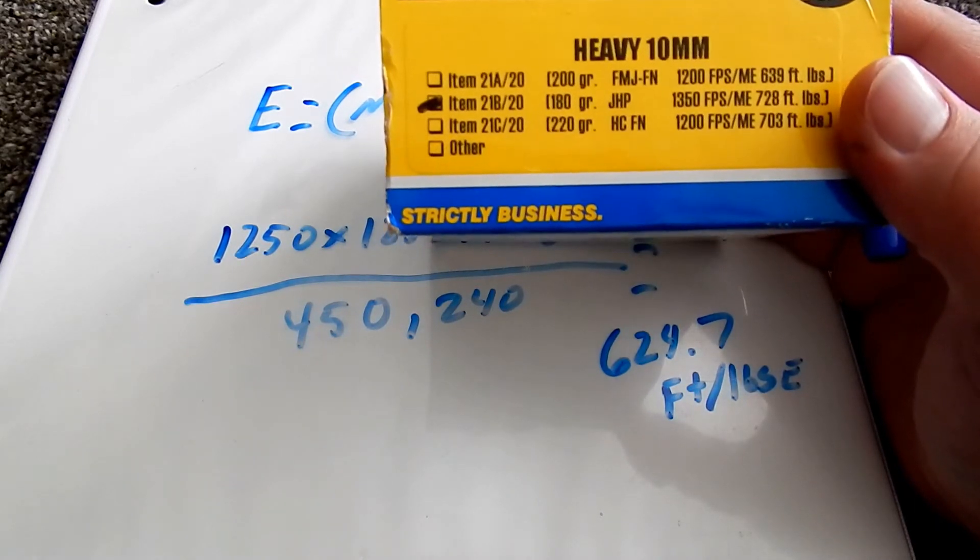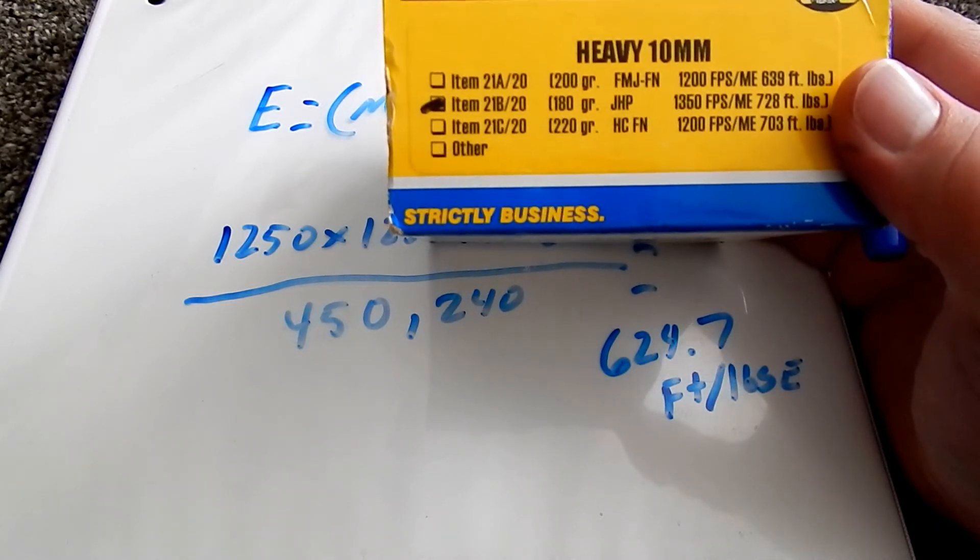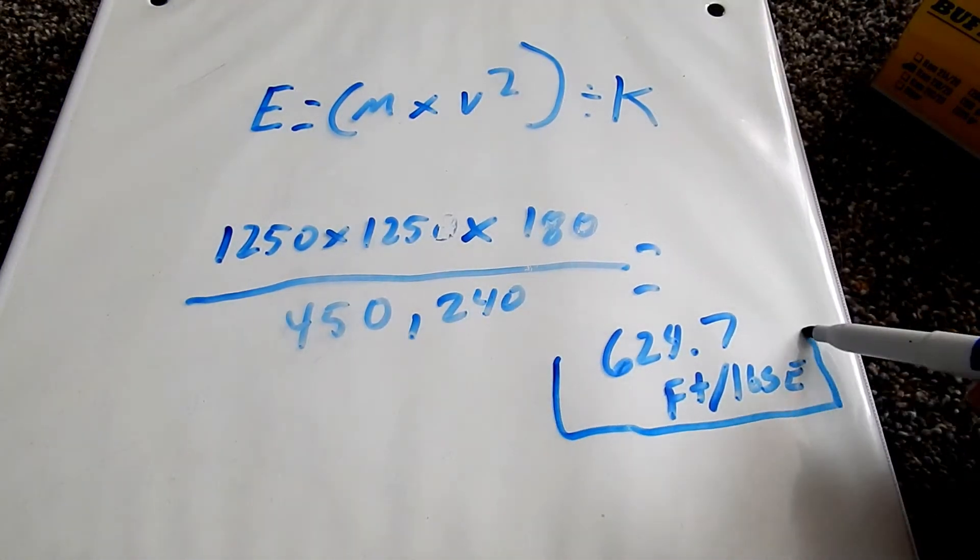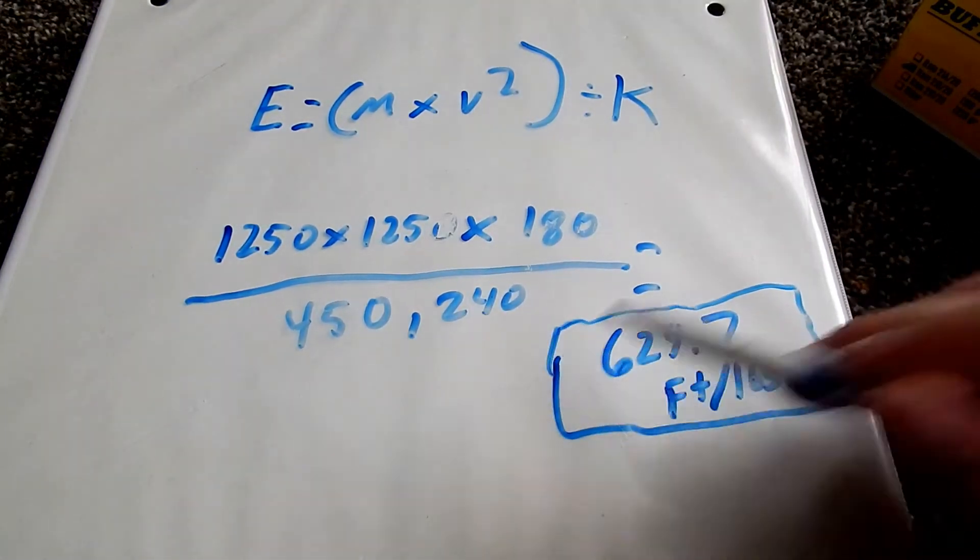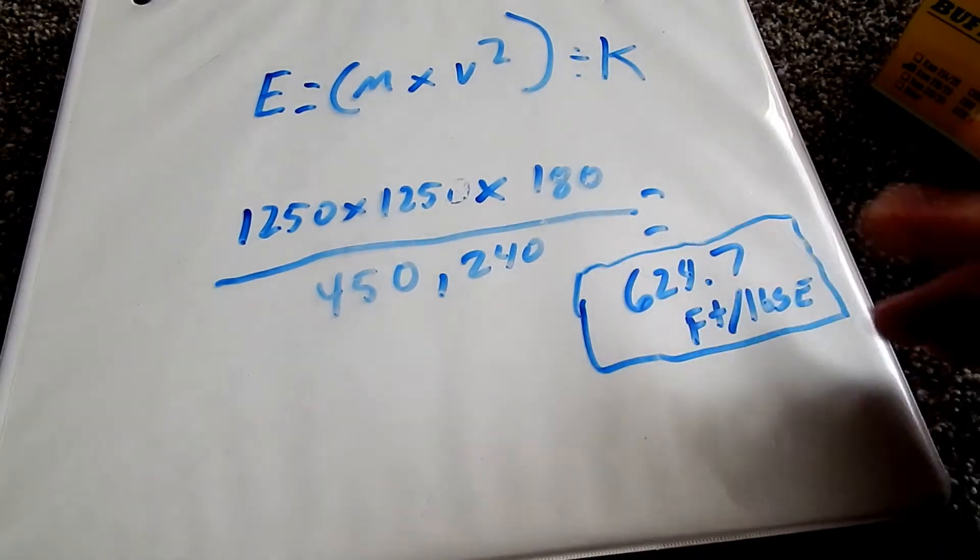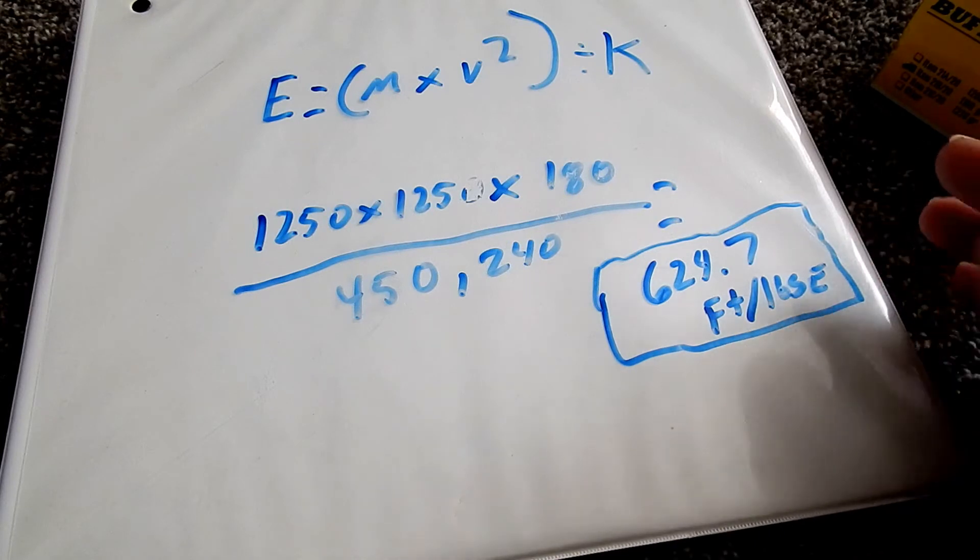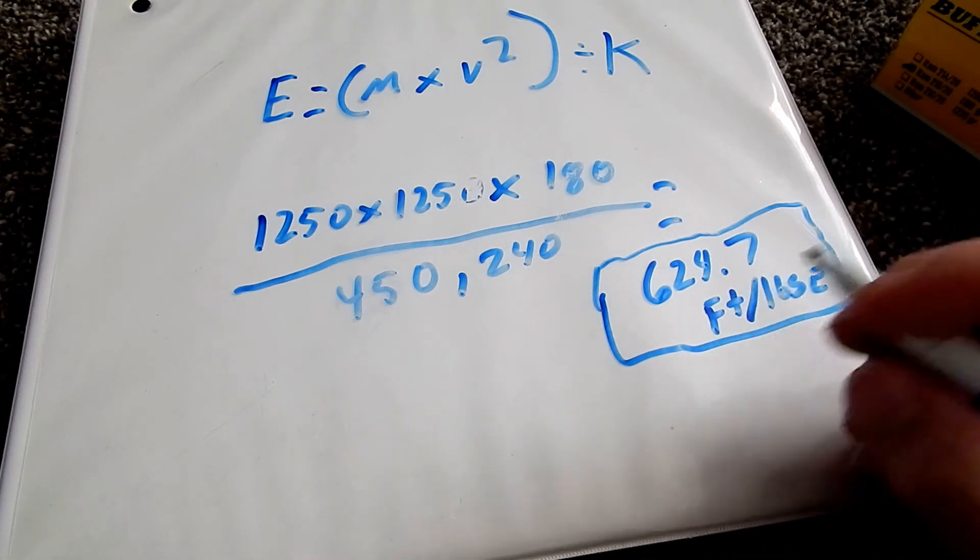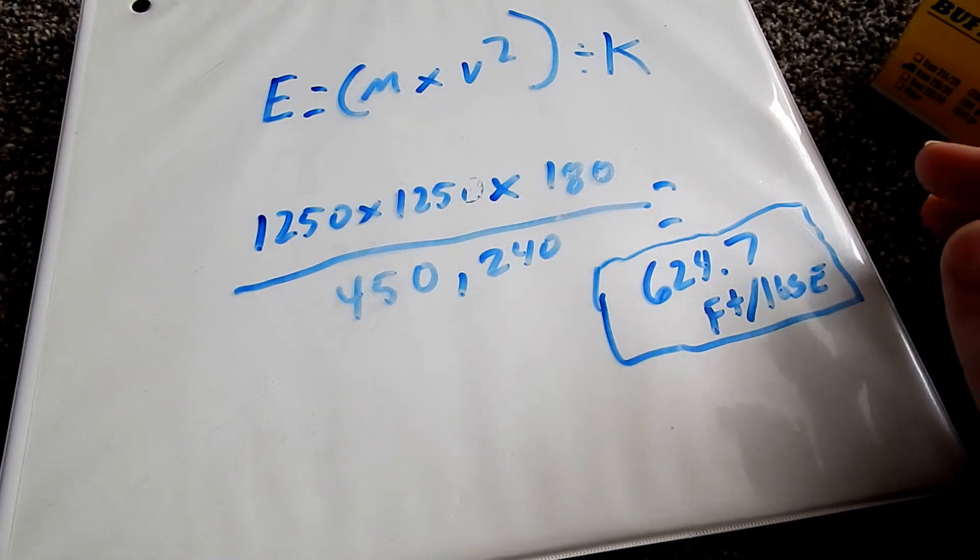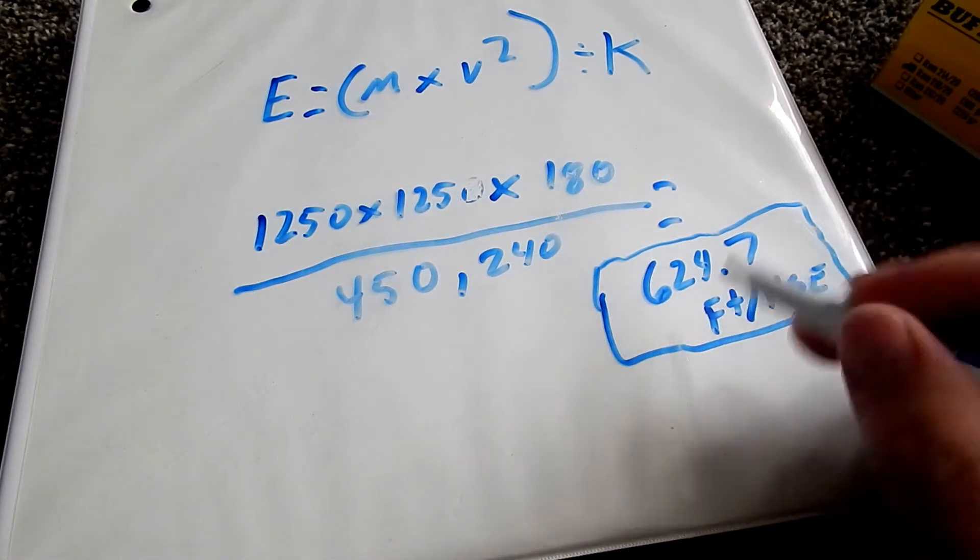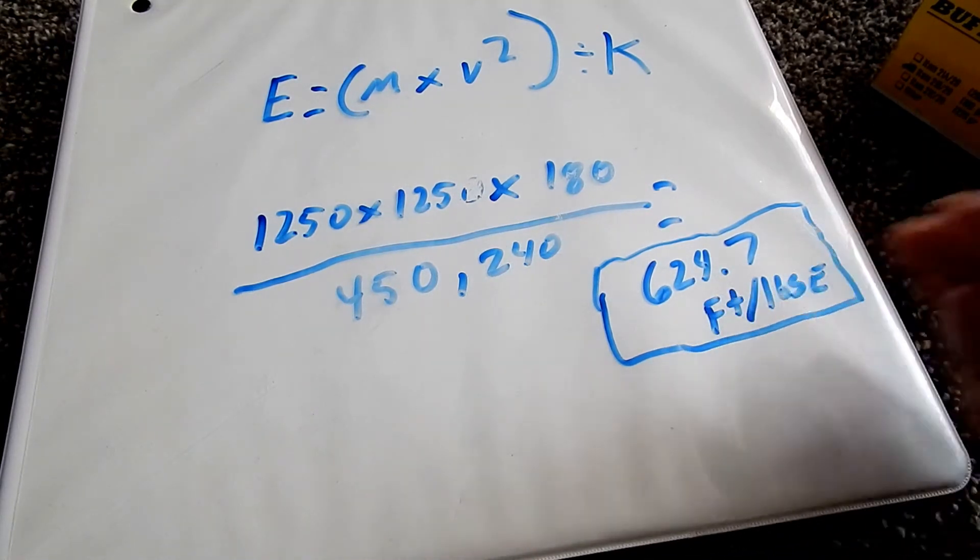But this is a fairly warm load considering that most of the 10mm ammo that's produced is only going about 1000 feet per second. And that only puts it around roughly in the mid to high 400s. So like I said, it'd still be a good round.